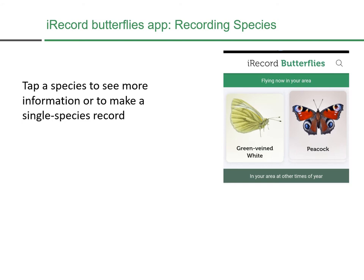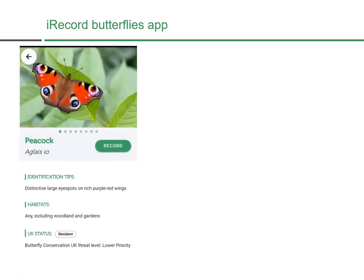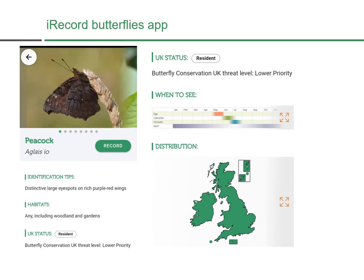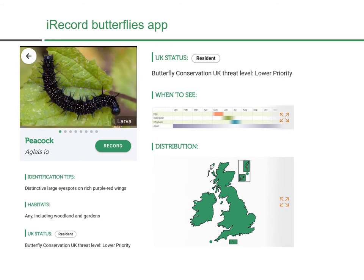If you want to make a record of a species or find out more information, you can tap its picture on screen. For example, tapping Peacock brings up more pictures, ID tips, its habitats, flight times, and known distribution in the UK. You can also swipe through photographs showing the upper wing, lower wing, and caterpillar stage — so it's an incredibly useful resource if you just want to find more information about butterflies.